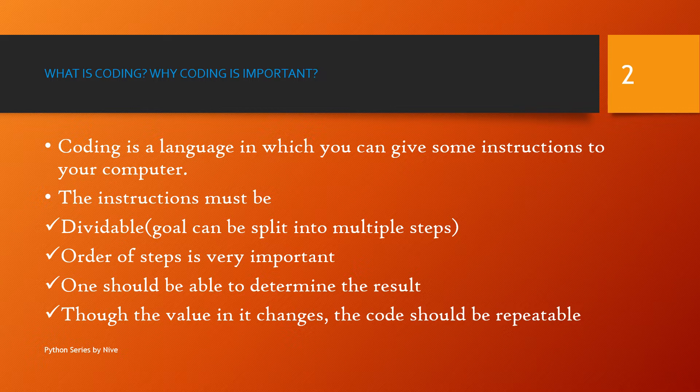The next property is that the steps must be ordered — the order of steps is very important. For example, if you're brushing your teeth: you wash your brush, put the paste on, then brush, clean it up, and put it back. That's the right procedure. You can't interchange the steps, because if you do, the final output will be completely a mess.